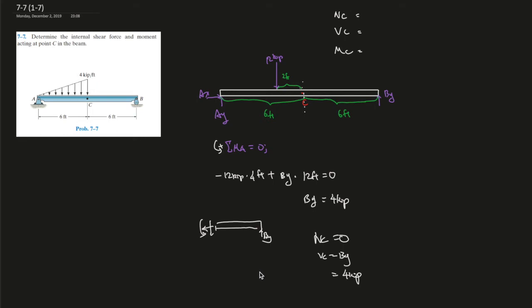And then we can use the sum of the moments at C equals to By is going a counterclockwise direction, so it's positive, times 6 feet minus the moments over here at C. The moment at C should give us 4 times 6 equals 24 kip foot.